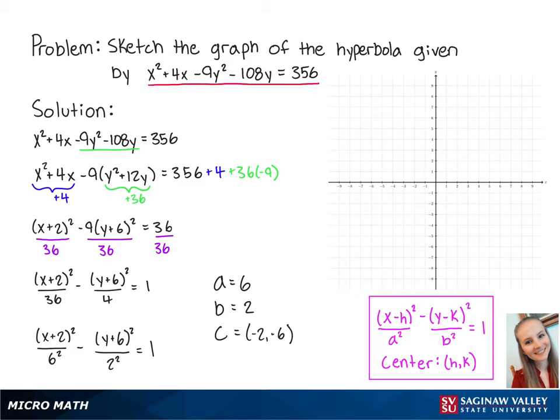Now we will graph the relevant points. The center is at negative 2, negative 6, and since a is equal to 6, we're going to graph two points, 6 to the left and 6 to the right of the center. So the first point is at negative 8, negative 6, and the second point is at 4, negative 6.